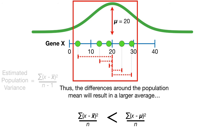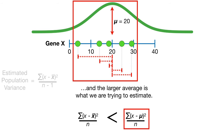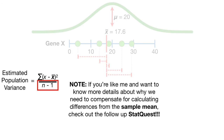Thus, the differences around the population mean will result in a larger average, and the larger average is what we are trying to estimate. Note, if you want to know more details about why we need to compensate for calculating differences from the sample mean, check out the follow-up StatQuest. The link is in the description below.